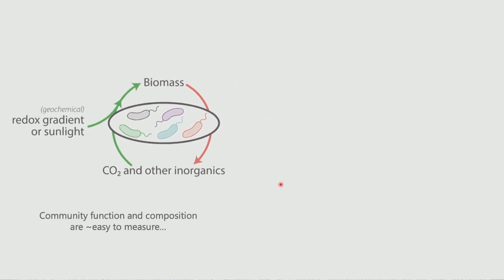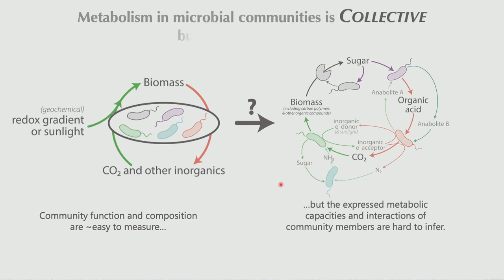What's currently relatively straightforward for us is to determine the composition of this community — we sort of know who's around. With a little more effort, we can also determine the function of the community, like the rate of carbon cycling. But what has become really clear throughout this meeting is that we're interested in knowing who is doing what: who are these specialists, what are their roles, and how do they interact with other community members?